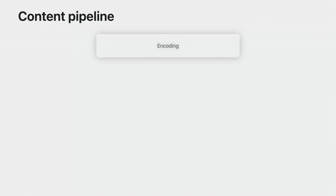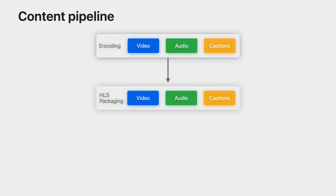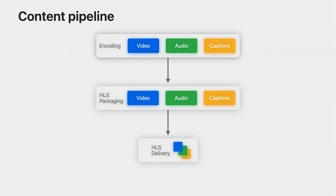With 2D content preparation and delivery covered, we'll turn to 3D video content, what's supported, and updates to the steps just described. Considering the content pipeline, we'll start with media encoding of video, audio, and captions. Then those media resources need to be packaged, ready for HLS delivery. This is how 2D content is delivered today.